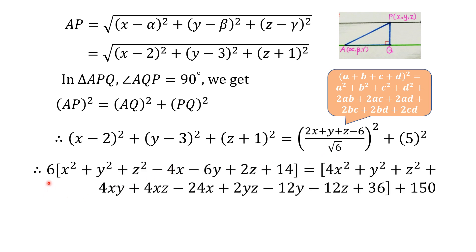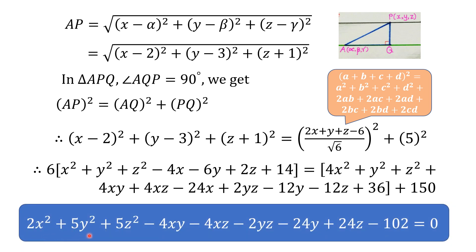Multiplying throughout by 6 (the square of root 6), we get: 6(x squared plus y squared plus z squared minus 4x minus 6y plus 2z plus 14) equals 4x squared plus y squared plus z squared plus 4xy plus 4xz minus 24x plus 2yz minus 12y minus 12z plus 36 plus 150. Simplifying, the equation of the required right circular cylinder is: 2x squared plus 5y squared plus 5z squared minus 4xy minus 4xz minus 2yz minus 24y plus 24z minus 102 equal to 0. In this way we can obtain the equation of the right circular cylinder from the given information. I hope you have understood this. Thanks for watching the video.